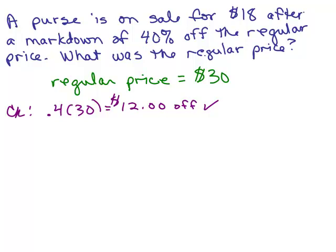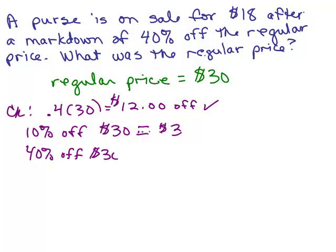Now how's another way you might think of doing 40% off? You could do 10% off four times. So 10% off $30, that's $3. So 40% off would be 4 times that. So that's another way you could figure out that it's $12 off. Both of them are legitimate.